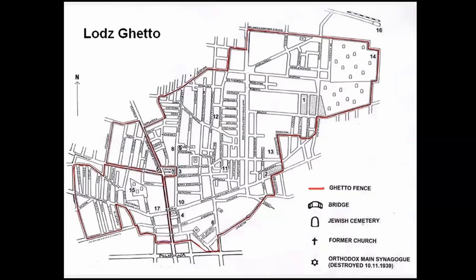Bear in mind how some groups suffered much more than others. This is a map of the ghetto in Łódź, Poland. The impact of the Nazi years was much more extreme in Eastern Europe than in Germany itself because there was a much larger Jewish population there. The six major death camps were all in Poland. In Ukraine there were no death camps — they simply grabbed the Jewish population from communities and shot them in the woods. Understanding this helps you understand the impact on families as you go through records.